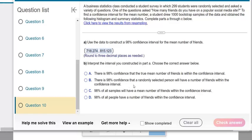Then interpret it. There's 98% confidence that the true mean number of friends is within the confidence interval. Yeah, that's right.